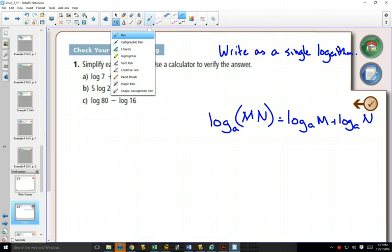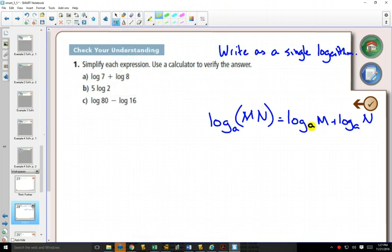We need, on the right hand side there's two logs. In order to use this log law, the bases have to be the same. So in our question a, are the bases the same? Yes. They're both base 10. So those are the common logs that have a base of 10. And if the bases are the same, then you're allowed to multiply.